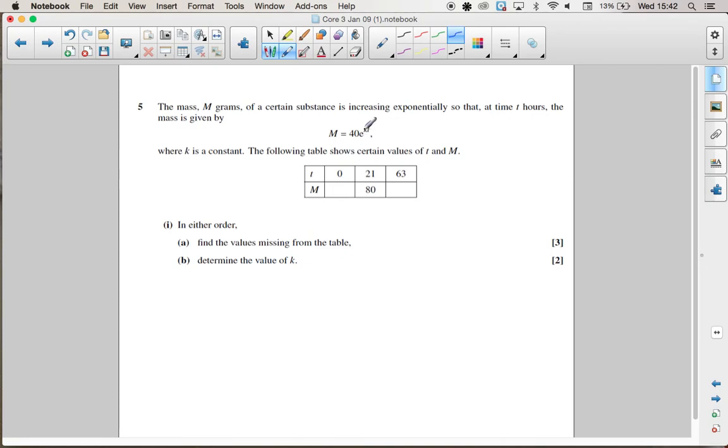We can do it in any order. So first of all, I'm going to fill in this missing value here, which is 40. It's 40 because it's the initial value when t equals 0. And that's always this number at the front. The reason is because when t equals 0, we have e to the power of 0, which is 1. So m is going to equal 40 times 1, which is 40.